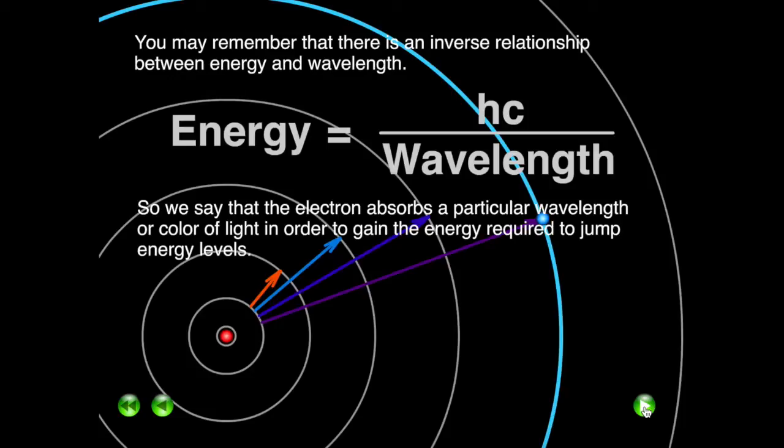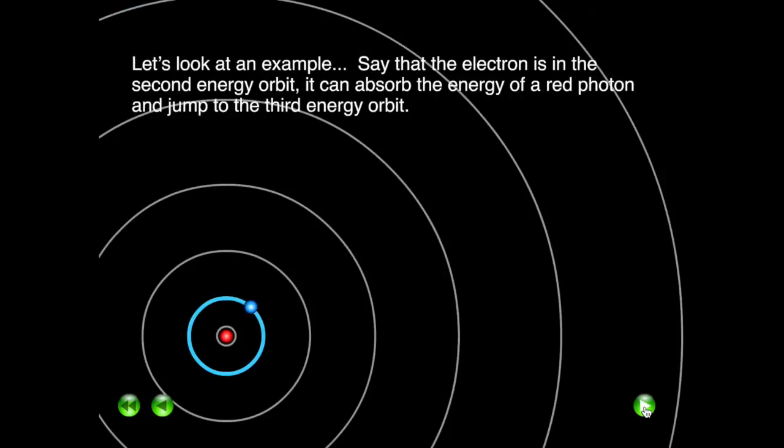Energy is inversely proportional to the wavelength. The higher the wavelength, the lower the energy. Red has the highest wavelength and therefore has the lowest energy.